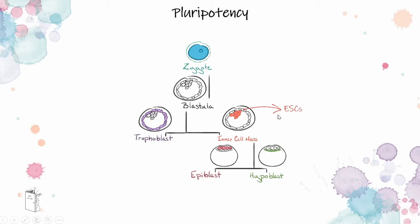Embryonic stem cells are the in vitro representation of this inner cell mass and as such have not yet lost the ability to generate all tissues of the embryo. While embryonic stem cells have been a useful tool in the study of differentiation and development in the past, their potential for generating patient-specific and disease-specific tissues is limited due to their origin from explanted blastocysts.